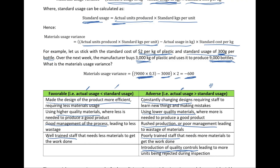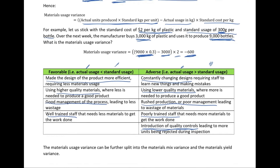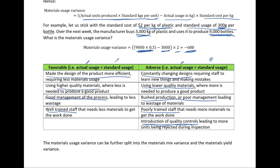We need to always consider why the variance is favorable or adverse before passing final judgment. One last thing to note: materials usage variance can be split further into materials mix variance and materials yield variance. So materials variance has price and usage components, and the usage variance can be further split into mix and yield variances, which we'll look at later in separate videos.